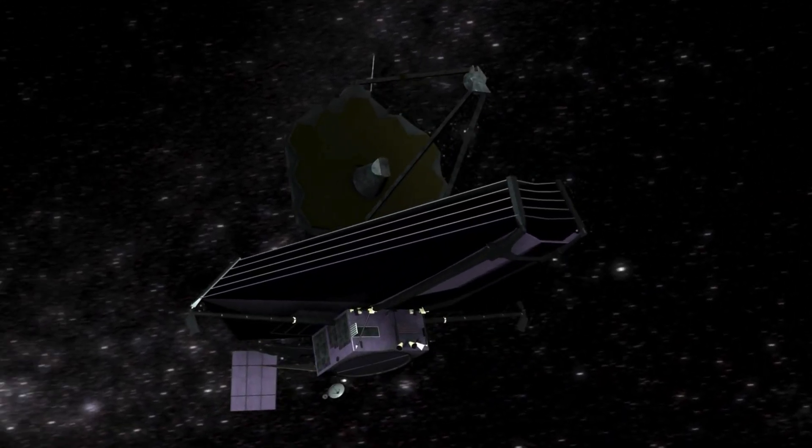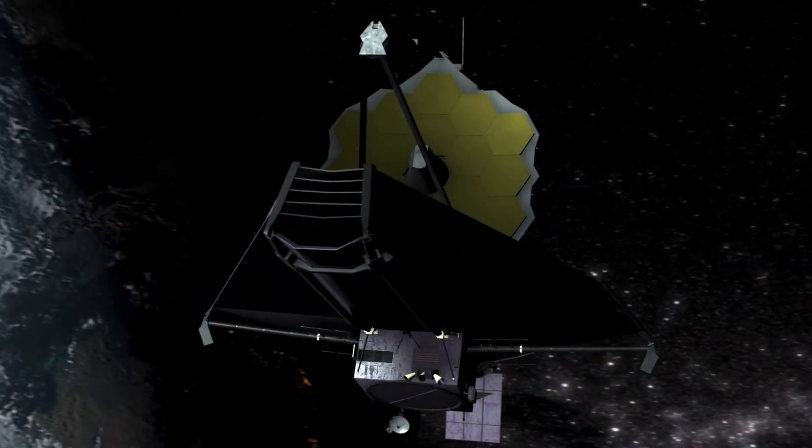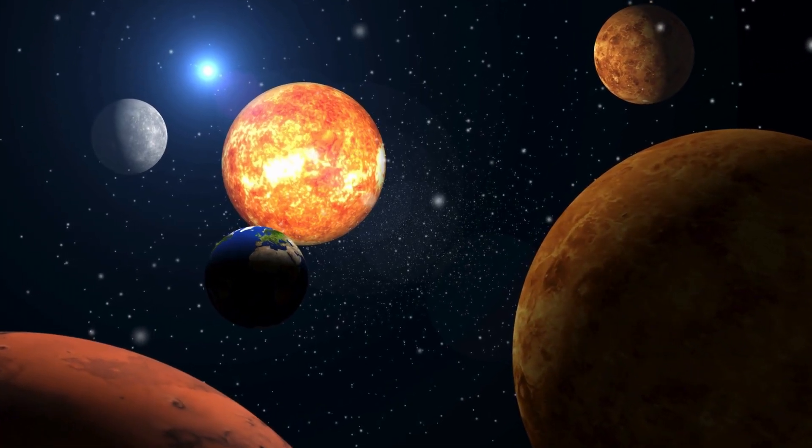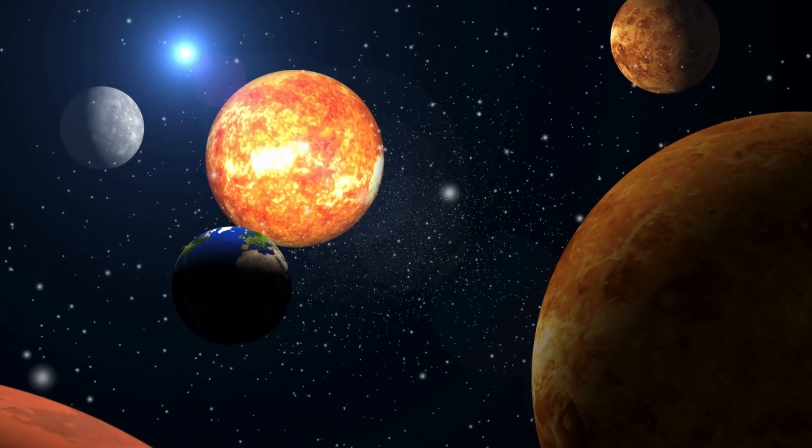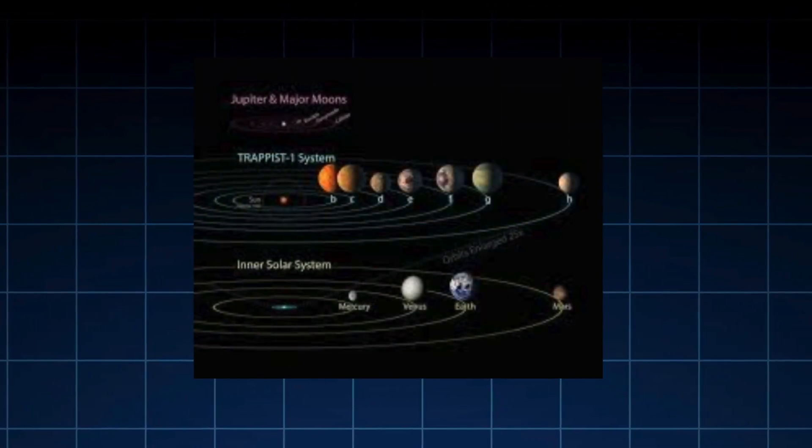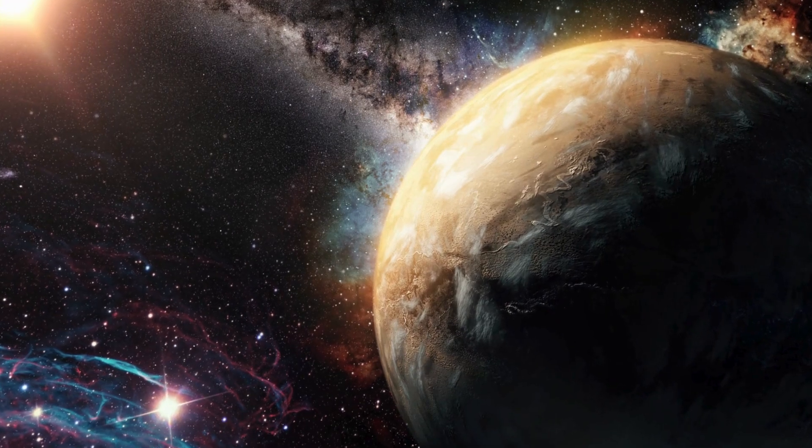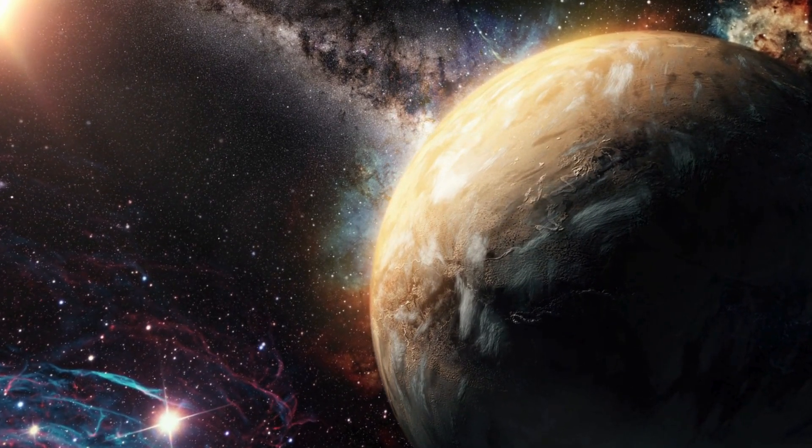And now, thanks to data from the James Webb Space Telescope, we may finally have a glimpse of its atmosphere. What we've found is astonishing. Could this be the first true Earth-like planet beyond our solar system? Could TRAPPIST-1e host life?